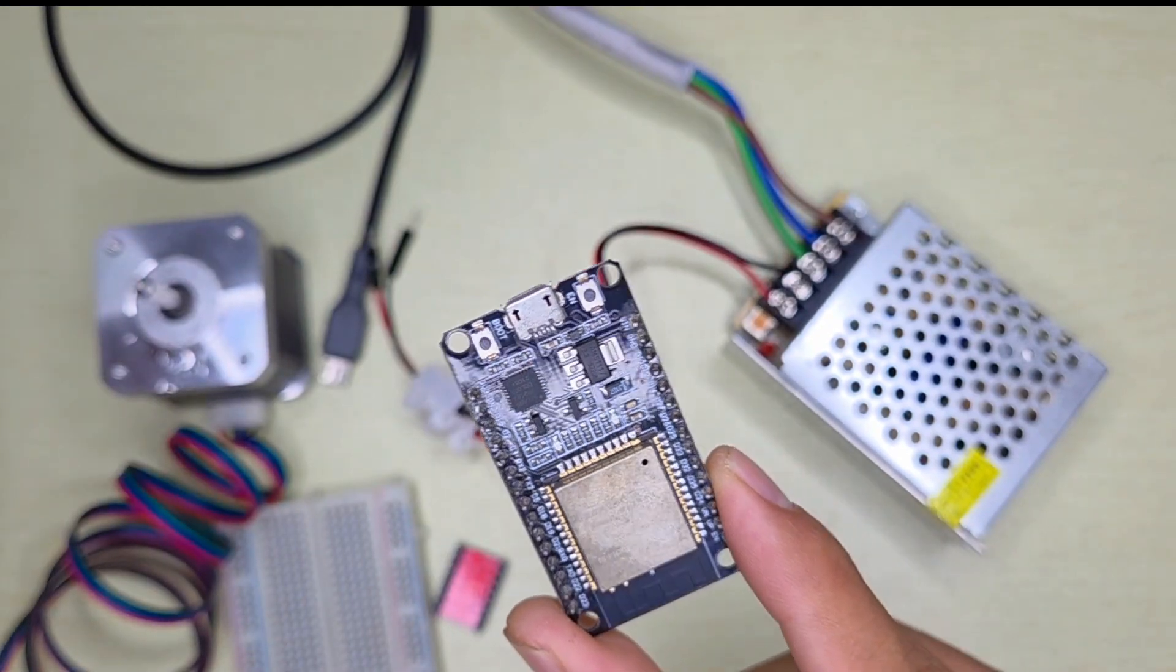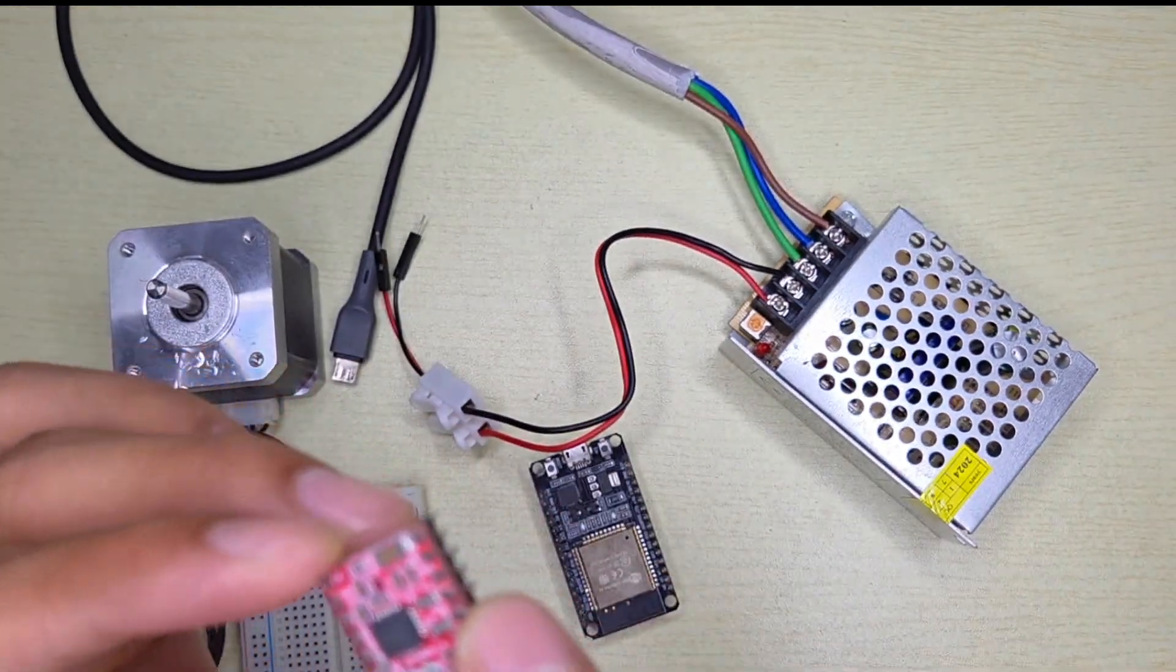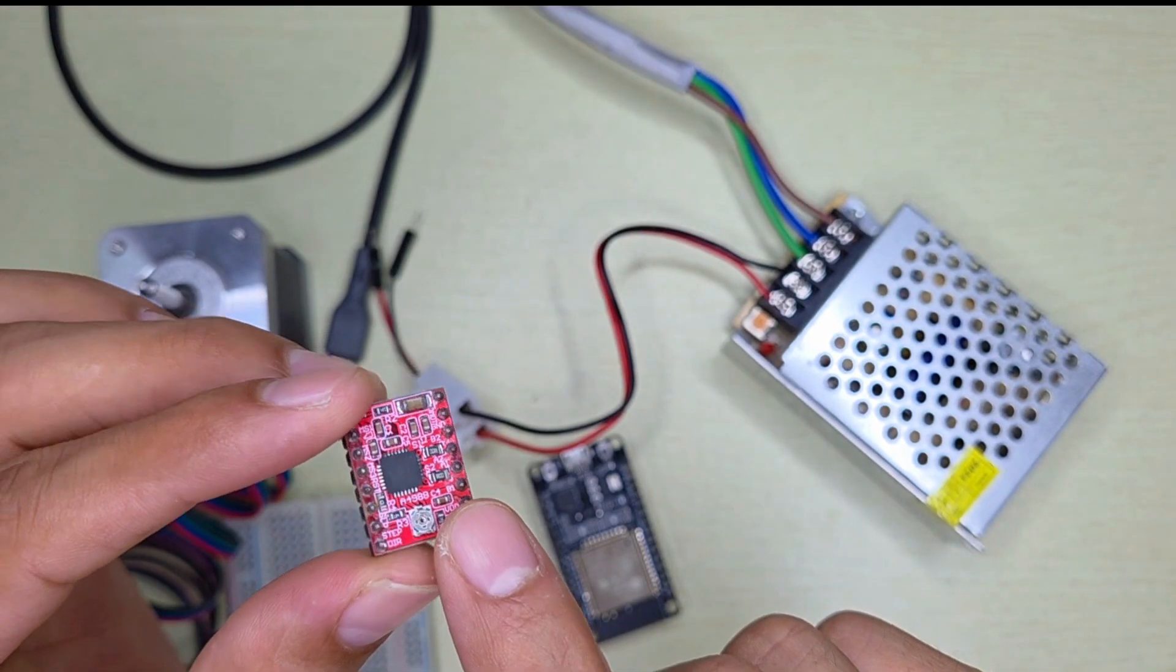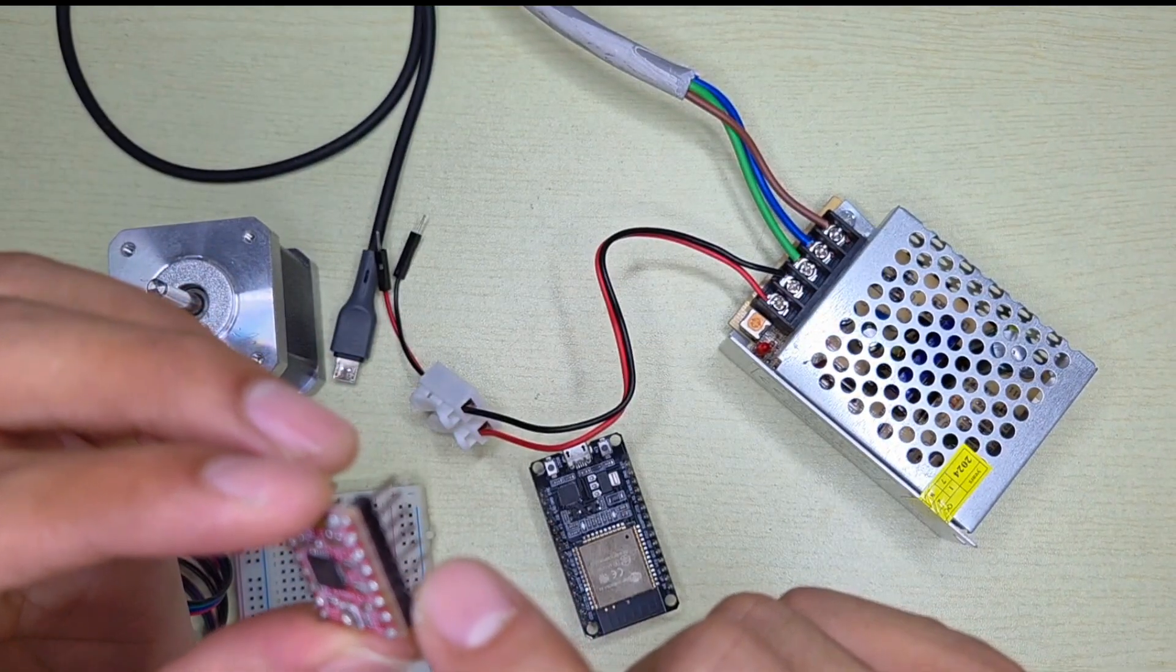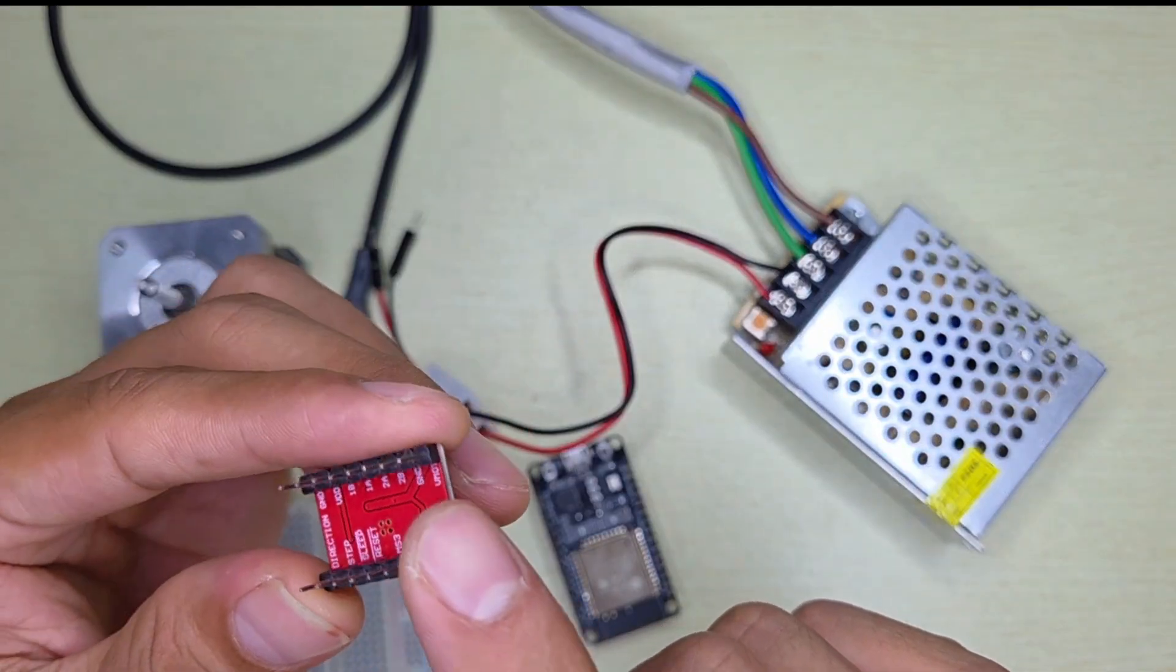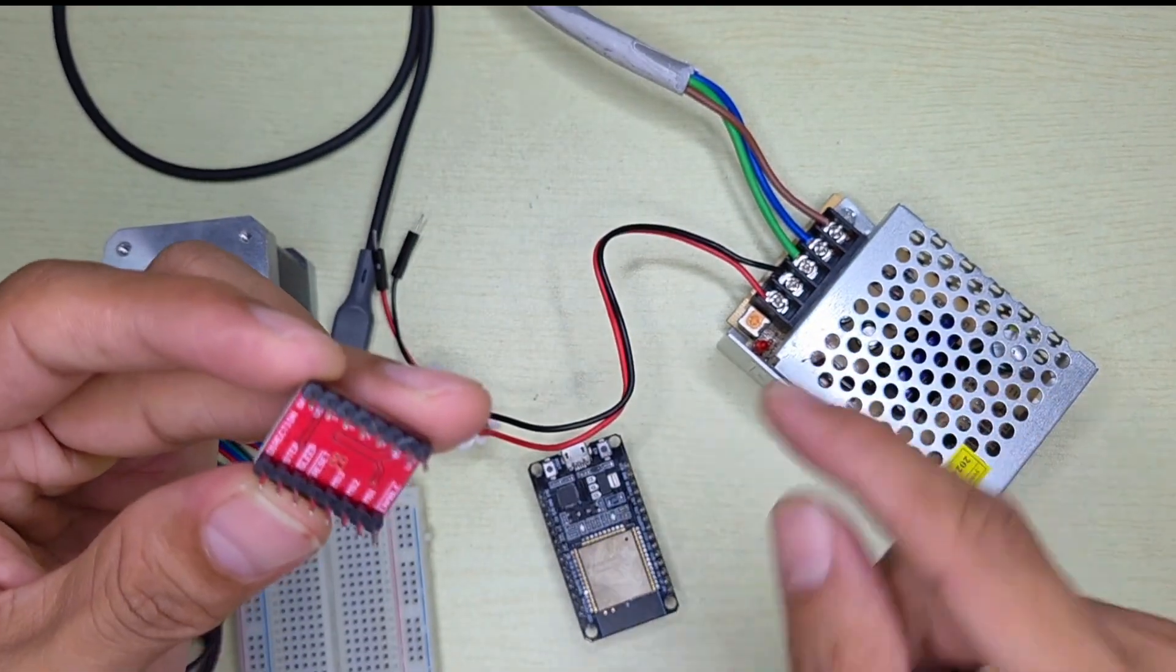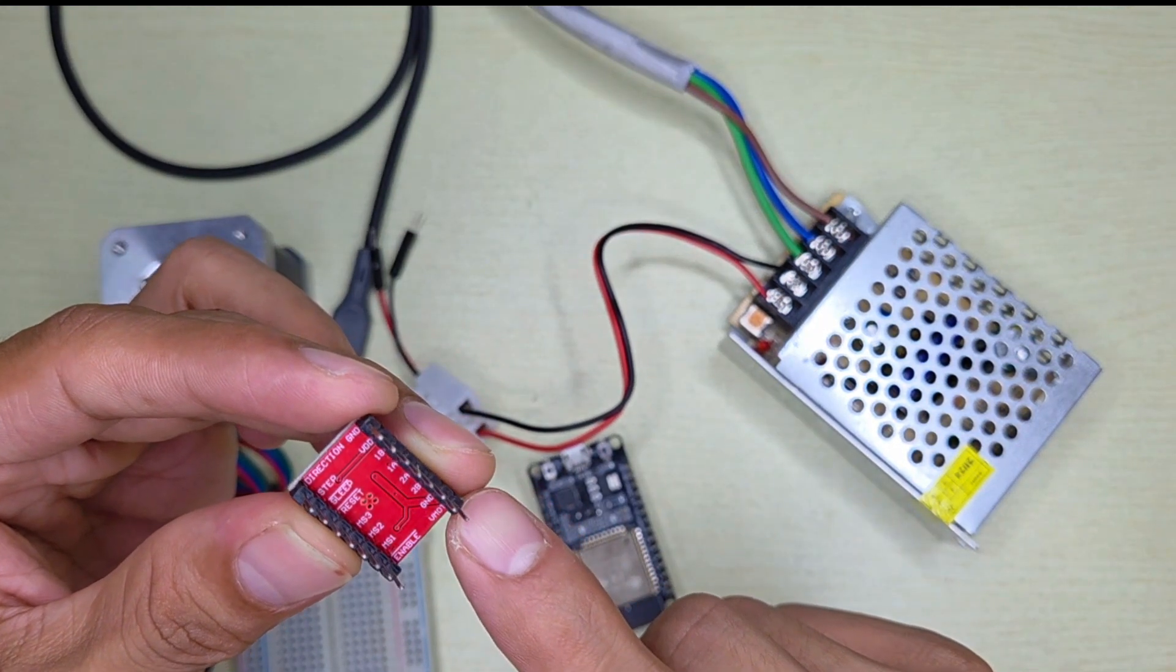We're going to use a stepper motor driver which is the A4988, which handles up to 2 ampere current. All of this side is for power. If you see from behind, this is much easier. We can see all the labels here. VMOT is the input for the 12-volt supply.